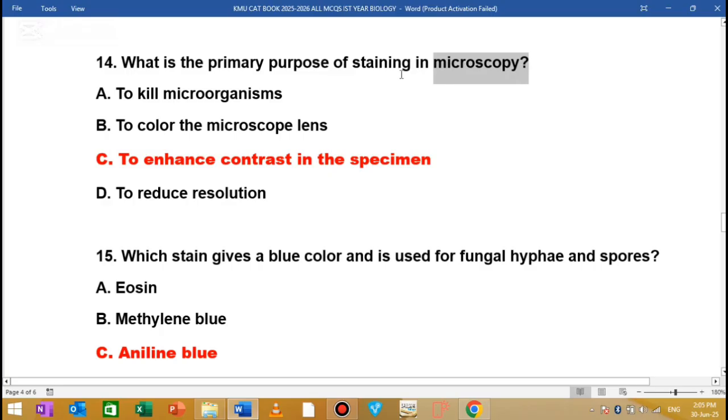Staining uses color. Options are: to kill microorganisms, to color the microscope lens, to enhance contrast in the specimen, or to reduce resolution. The purpose of staining is to enhance contrast in the specimen.